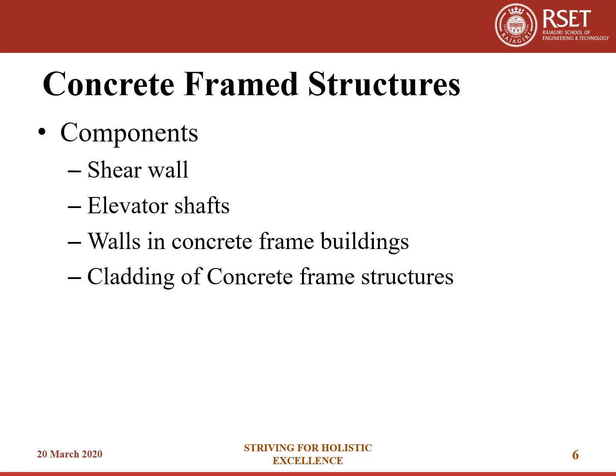Components of a concrete framed structure: horizontal members are called beams and vertical members are called columns. Slabs are large thick flat pieces of concrete reinforced with steel rebar, typically square or rectangular in shape. The column is the most important element as it is the primary load-carrying element of tall buildings. If a beam or slab gets damaged, it will affect only one floor, but a damaged column could bring down the entire building. Other important components include shear walls, elevator shafts, walls, and cladding of concrete frame structures.